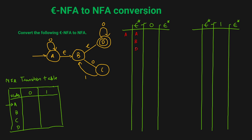Now from these three states A, B, and D, if you get input 0, where do you go? In state A, if you get 0, you go to state A itself. In state B, if you get 0, you go to state C. And in state D, if you get 0, you go to state D itself. Now again for these three states we are going to check the Epsilon closure. For state A, we already know it is A, B, D. For state C, the Epsilon closure is only state C. And for state D, the Epsilon closure is only state D.